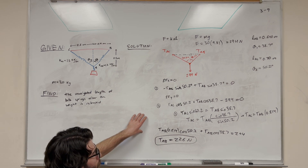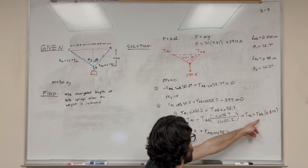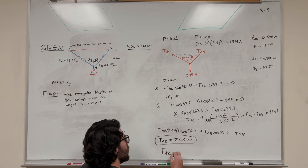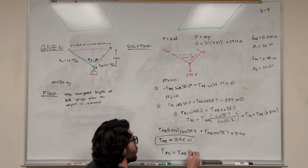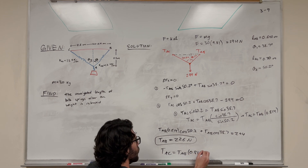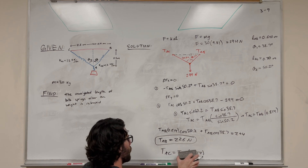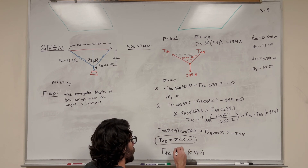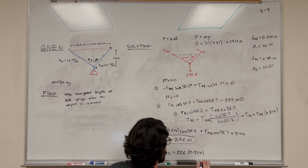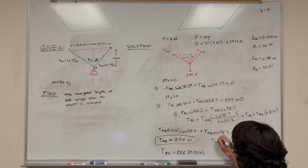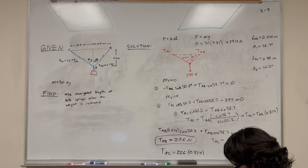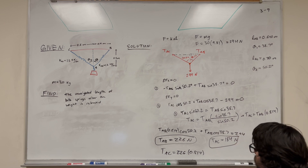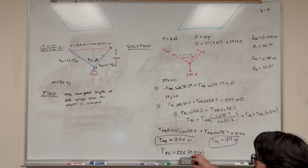Now we go back to our earlier equation to find tension AC. Tension AC equals tension AB times 0.814. We just found tension AB is 226 newtons, so plugging that in gives tension AC equal to 184 newtons. So we've found both forces — our two tensions.